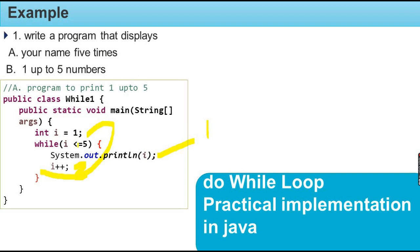When `i = 2`, it is less than or equal to 5 — true. The statement executes: `System.out.println` prints 2. Then the band increment makes `i = 3`. The condition is checked again: 3 is less than or equal to 5 — true. The statement executes and prints 3. Band increment makes `i = 4`. Then checks condition again: 4 is less than or equal to 5 — true.